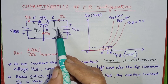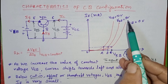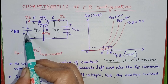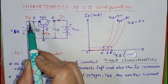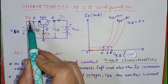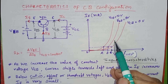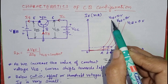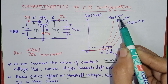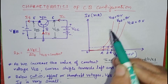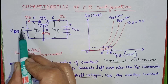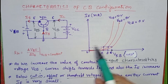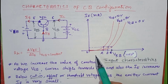Now we will fix the value of VCB equals to 5V, change the value of VEB, and note the value of IE. Then we will get this curve. And when we fix the value of VCB equals to 10V, then change the value of VEB and note the value of IE, we will get this curve.